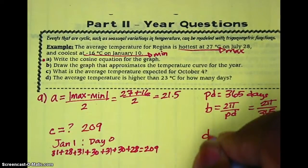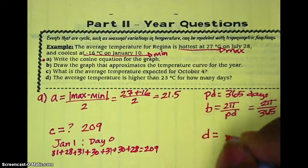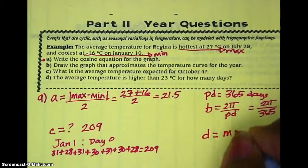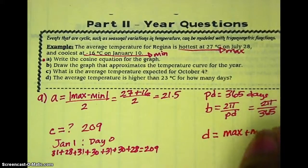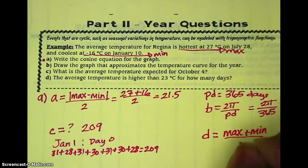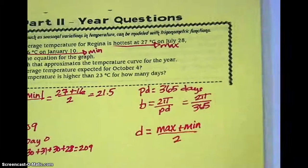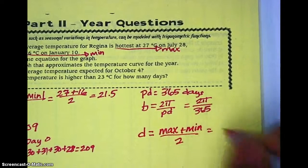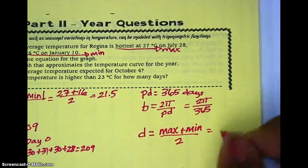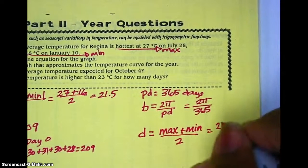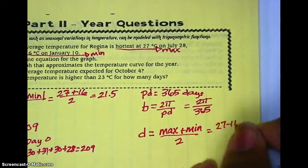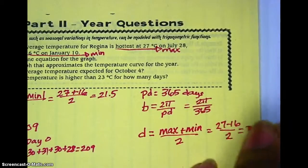Lastly, we need a value for D. This also has a formula — it is the average of the maximum and minimum points. For us, that is going to be 27 minus 16 divided by 2, which is 5.5.